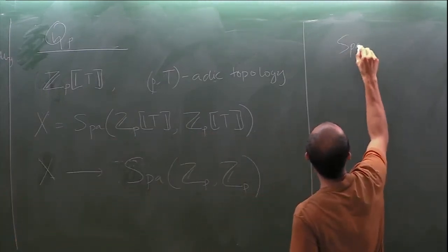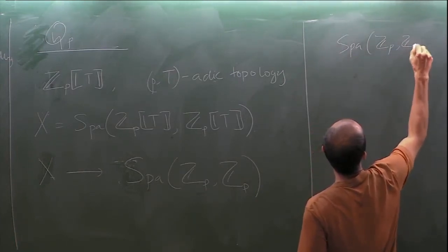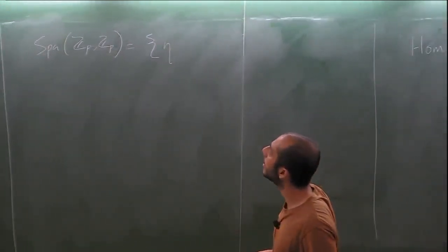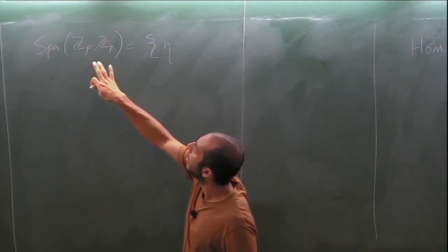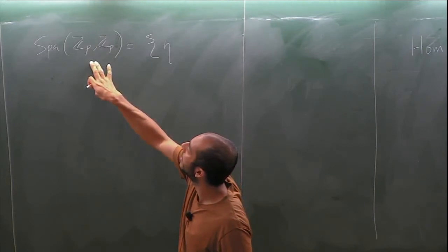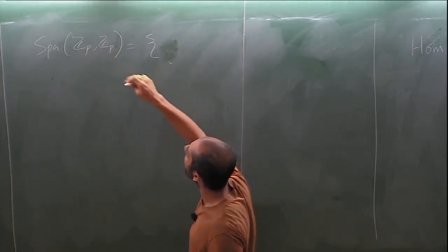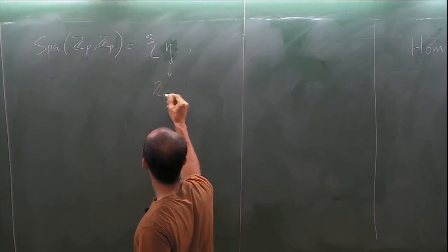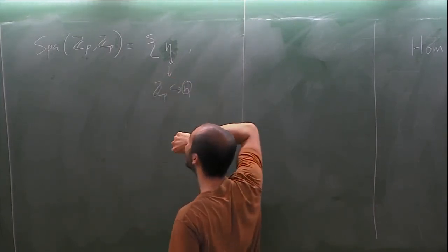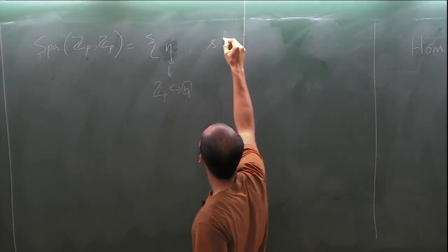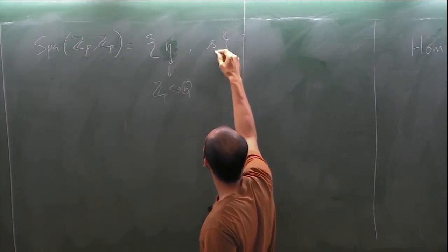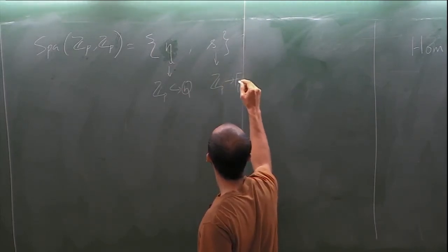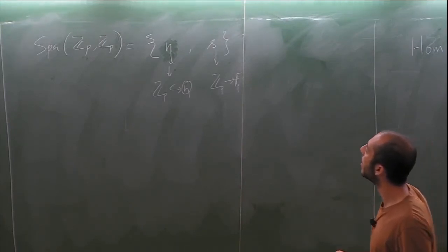spa(ℤ_p, ℤ_p) is actually a two-element set. One element is the generic point η, corresponding to the p-adic norm on ℤ_p coming from the inclusion ℤ_p ⊂ Q_p. The other is the special point s, coming from the map ℤ_p → 𝔽_p and taking the trivial valuation on 𝔽_p. These are the only continuous valuations on ℤ_p.